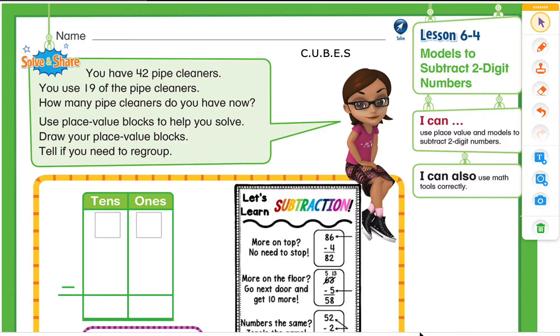So let's take a look at our solve and share. You have 42 pipe cleaners. You use 19 of the pipe cleaners. How many pipe cleaners do you have now? Use place value blocks to help you solve. Draw your place value blocks. Tell if you need to regroup.